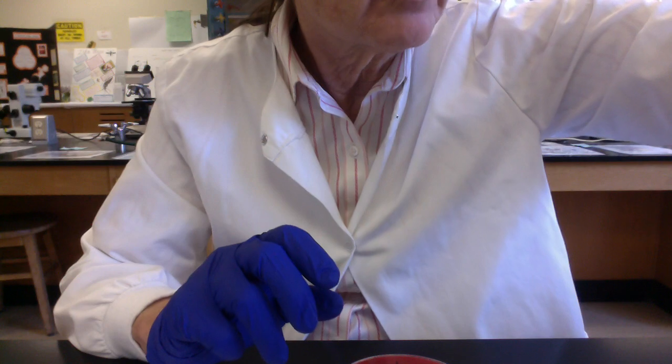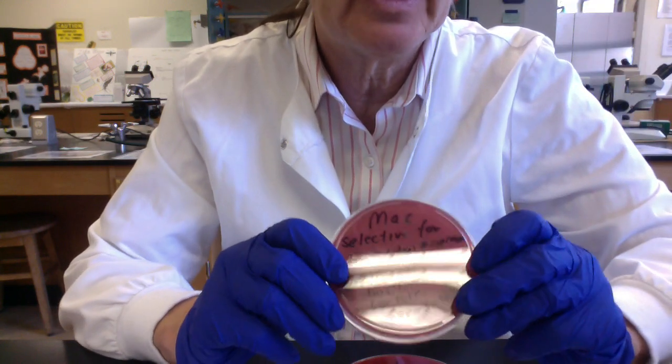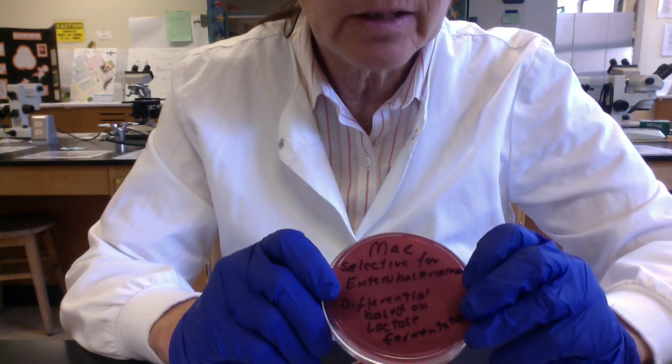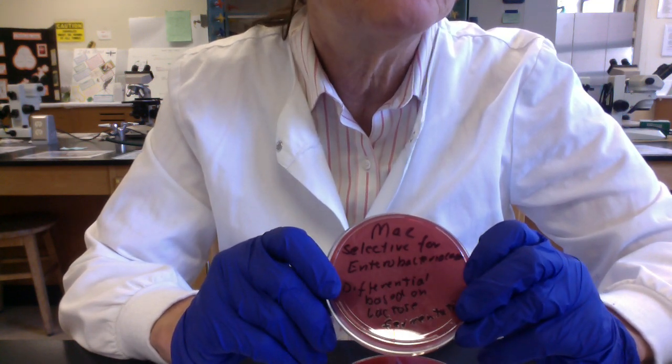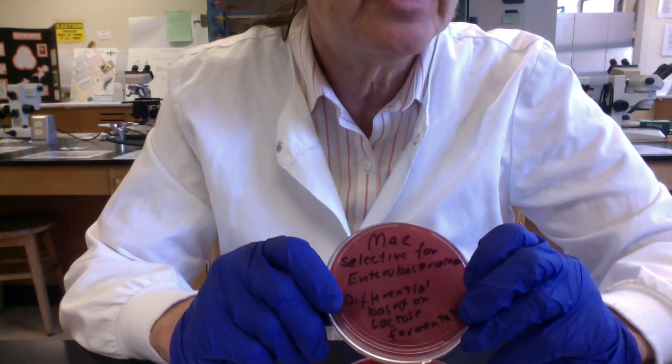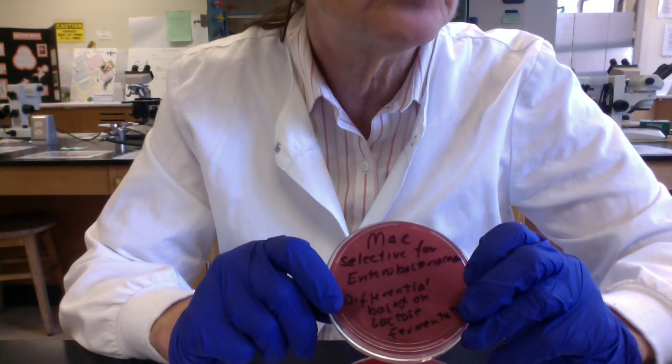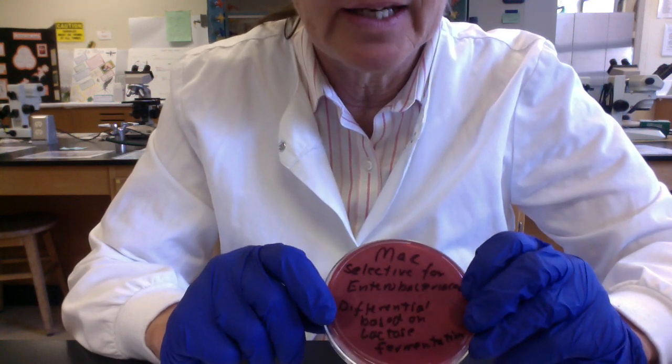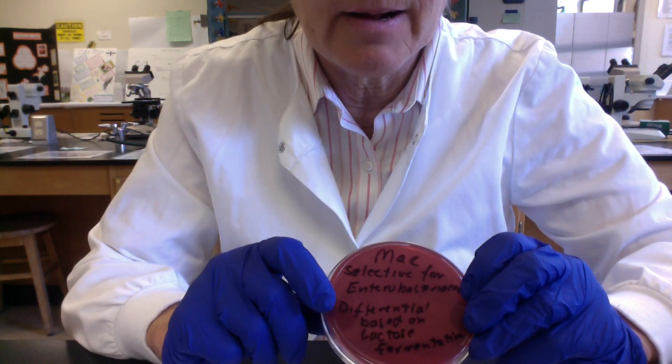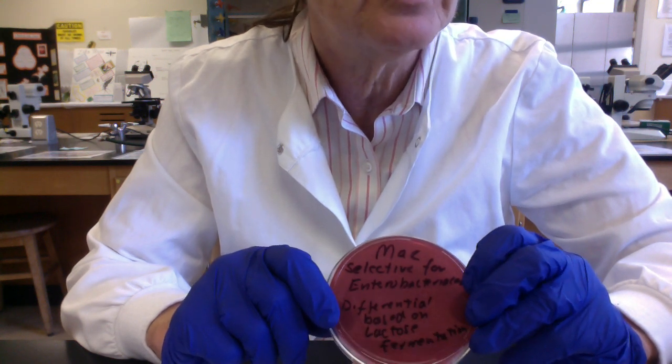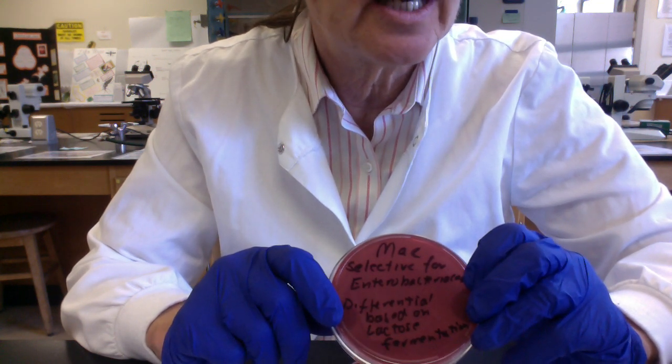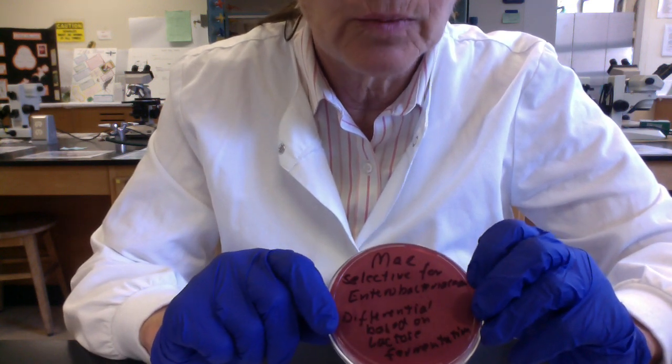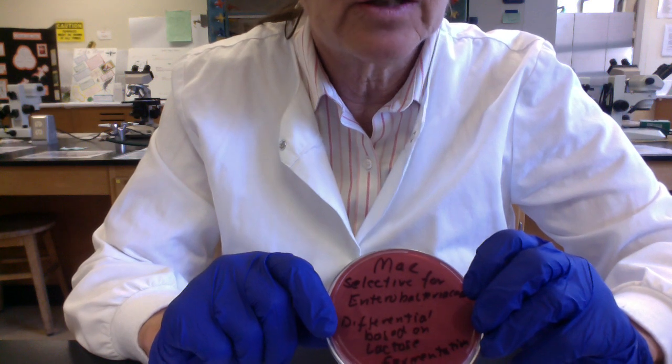The last plate we have here is an example of both a selective and differential medium. This is called MacConkey's agar. It selects for gram-negative Enterobacteriaceae. These are gram-negative bacteria that have evolved to live in the intestines, thus enterics. And then, in addition, it's differential. So the Enterobacteriaceae that can grow, we can group them according to their ability to ferment lactose. So MacConkey's is also differential based on lactose fermentation.